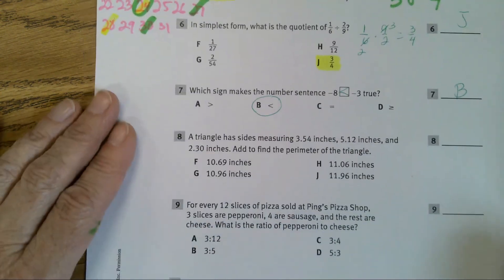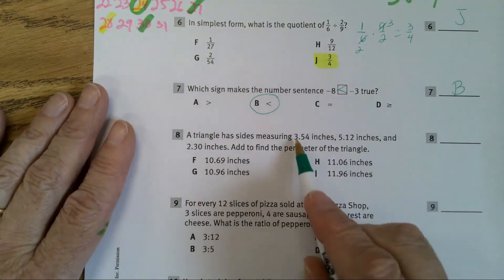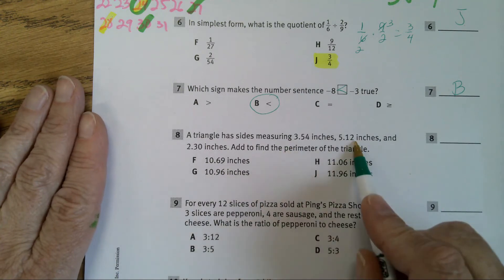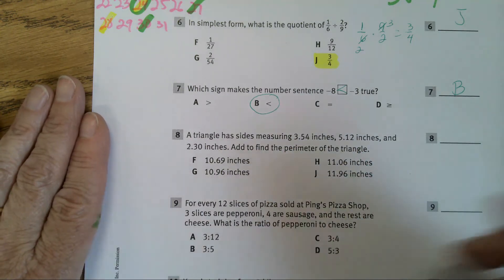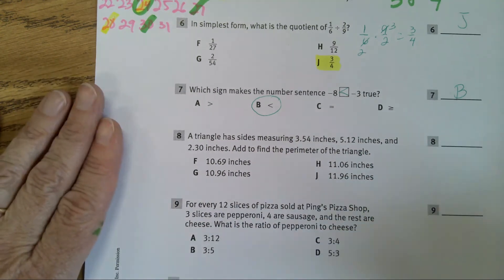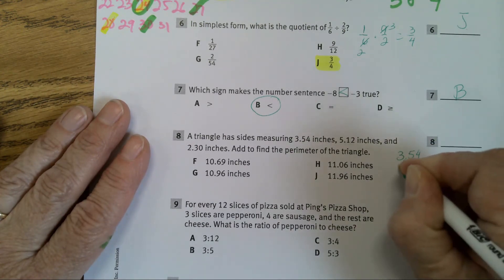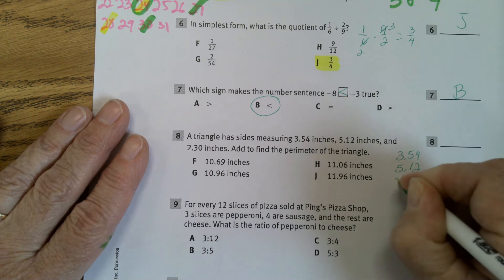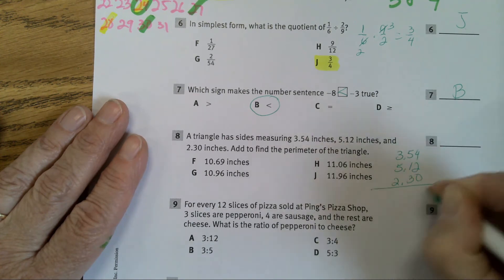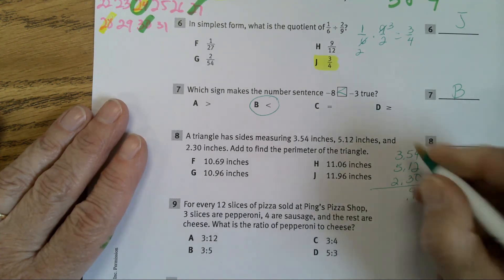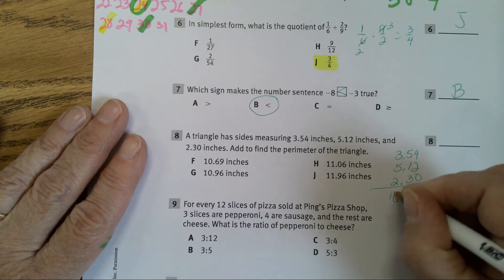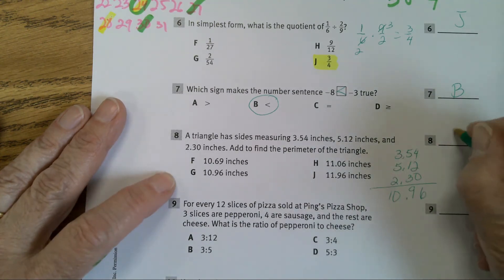In number 8, a triangle has sides that measure 3 and 54 hundredths, 5 and 12 hundredths, and 2 and 30 hundredths inches. Find the perimeter. Well, you just line your decimal points up. And when you do that, you end up getting the answer, 10 and 96 hundredths, G.